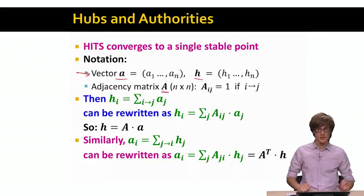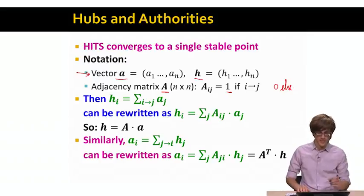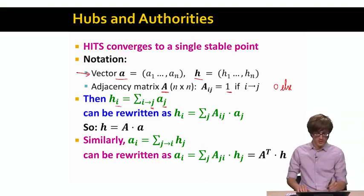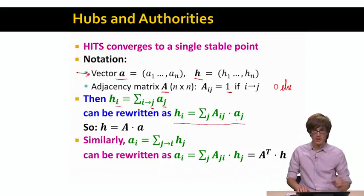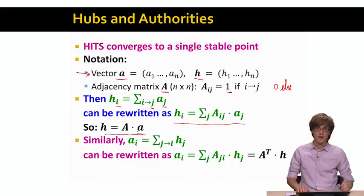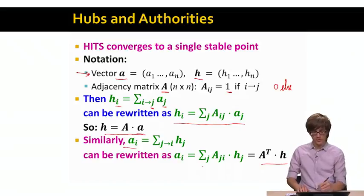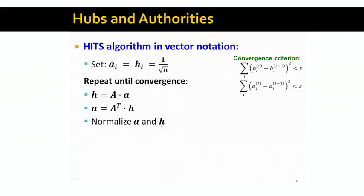The hub update equation says: the hub score of node i is the sum of authority scores of all nodes that i points to. In matrix form, this is H equals the adjacency matrix A times the authority vector A. Analogously, the authority update equation is: A equals A-transpose times H.